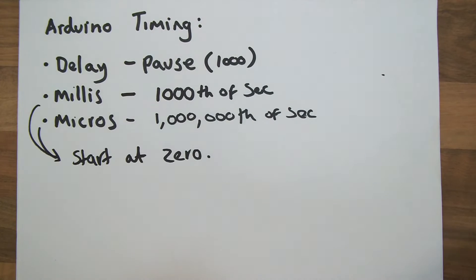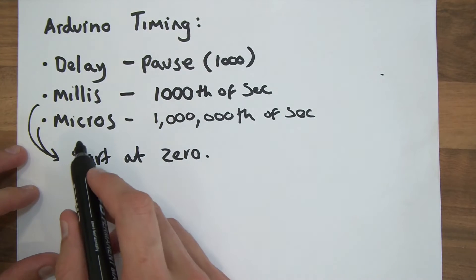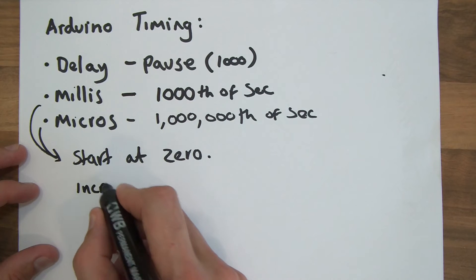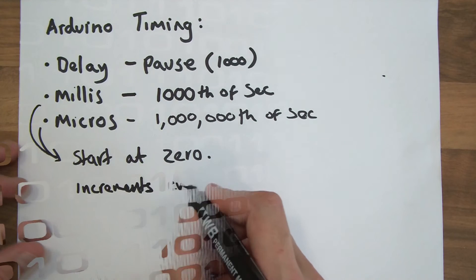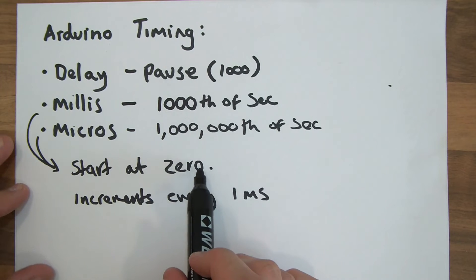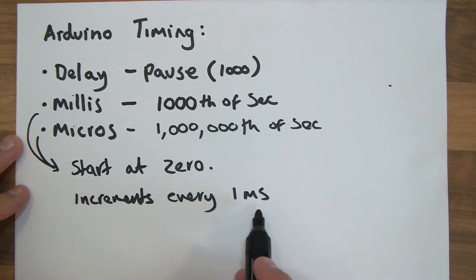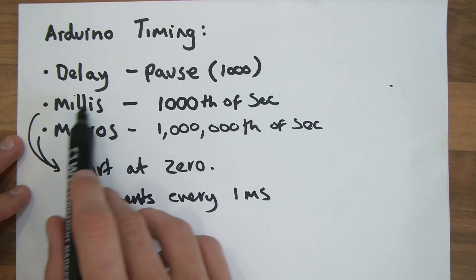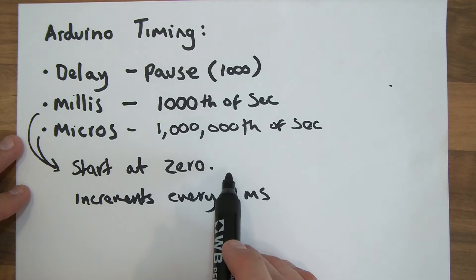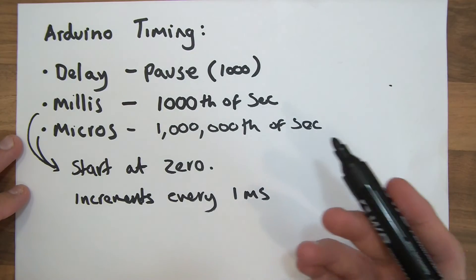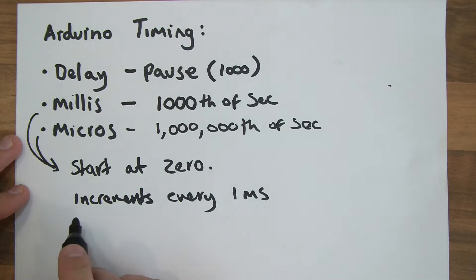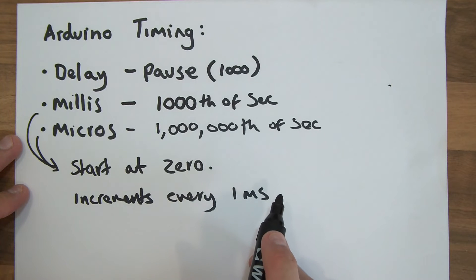So when you first turn the Arduino on, these are zero. And then what happens is every millisecond after the Arduino is turned on, this gets incremented. So it increments every one millisecond from the time when you turn the Arduino on and it starts running the sketch. The value automatically increments by one millisecond. And that's this millis value here or this method here. When you call it, it returns the value in milliseconds from the time the Arduino was started. So if you were to turn the Arduino on and then call this millis function exactly one second after you've turned it on, the millis function would return 1000 milliseconds.